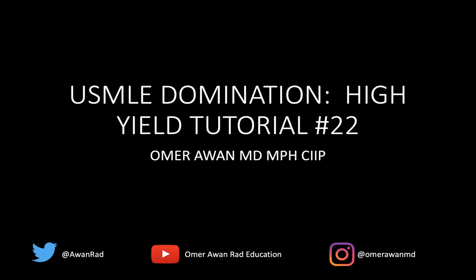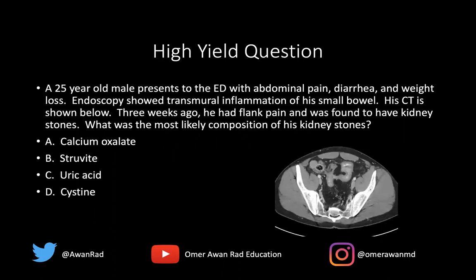Hello everyone, and welcome to USMLE Domination High Yield Tutorial number 22. Let's get started with a high yield question. A 25-year-old male presents to the ED with abdominal pain, diarrhea, and weight loss. Endoscopy showed transmural inflammation of his small bowel. Three weeks ago, he had flank pain and was found to have kidney stones. What was the most likely composition of his kidney stones? Calcium oxalate, struvite, uric acid, or cysteine? We'll come back to this at the very end, along with three more high yield questions throughout the tutorial.